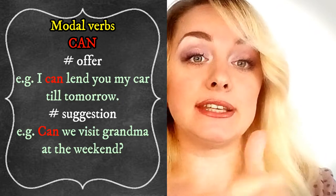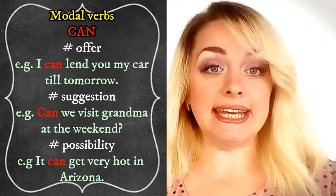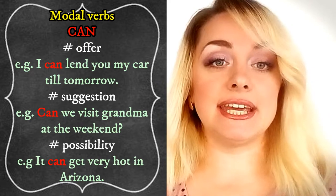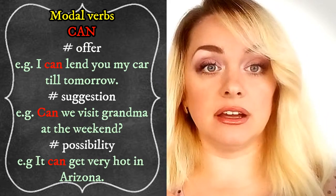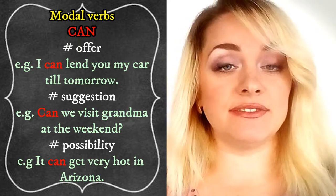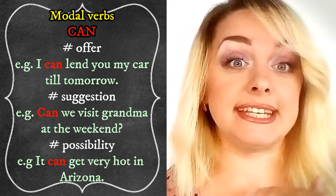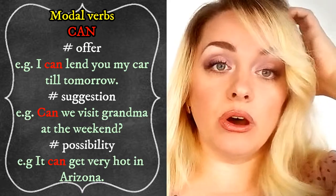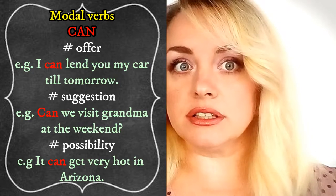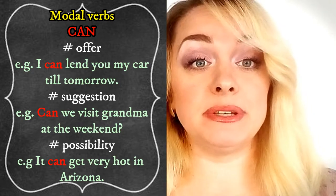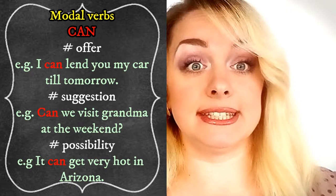The sixth use of 'can' is possibility. For example, 'It can get very hot in Arizona.' It's a possibility — we do not know exactly if it is hot or cold. We just express the possibility that it can get hot in Arizona.